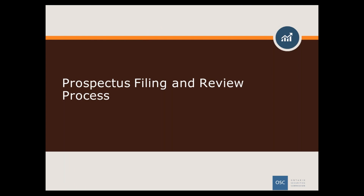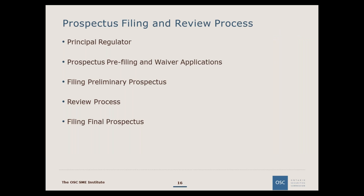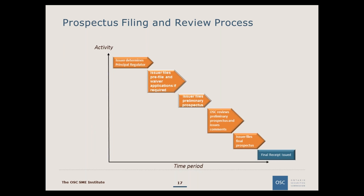I'd now like to move on to discuss the prospectus filing and review process. This is meant to give an overview of what can be expected when filing a prospectus with the Ontario Securities Commission. An issuer would start off by determining the principal regulator, then file a pre-file or application if applicable, followed by filing a preliminary prospectus. A preliminary prospectus will be reviewed by OSC staff and comments may be issued. Once all comments are addressed, the issuer would be cleared to file a final prospectus, after review of which a final receipt would be issued.